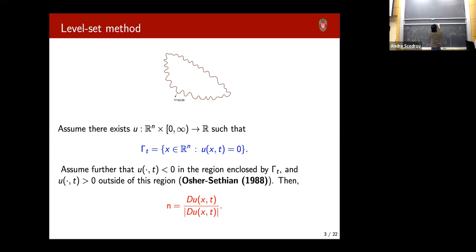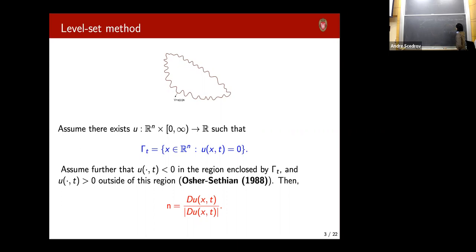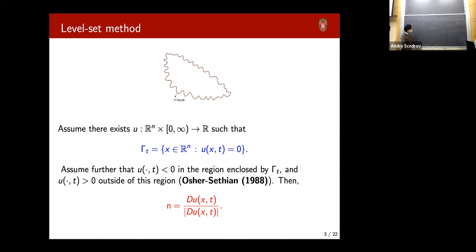The level set method is interesting in the sense that instead of directly considering the movement of the front, they associate the problem with a function. For each time t, consider the function u(x,t) such that u(x,t) < 0 inside the region enclosed by gamma_t, and u(x,t) > 0 outside. That means gamma_t is exactly the zero level set of u. So gamma_t is the zero level set of some unknown function u, and you write a PDE for that — that's called the level set method.